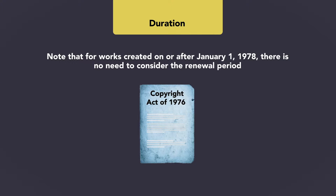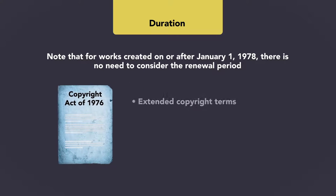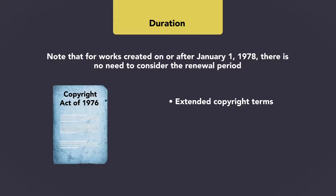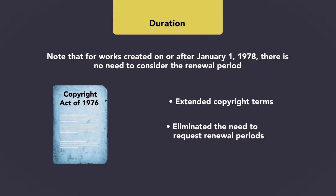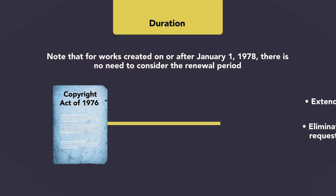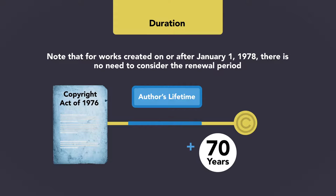For works created on or after January 1, 1978, there is no need to consider the renewal period. The Copyright Act of 1976 extended copyright terms and eliminated the need to request renewal periods. For those works, the copyright term is simply the lifetime of the author plus 70 years, with no option to renew.